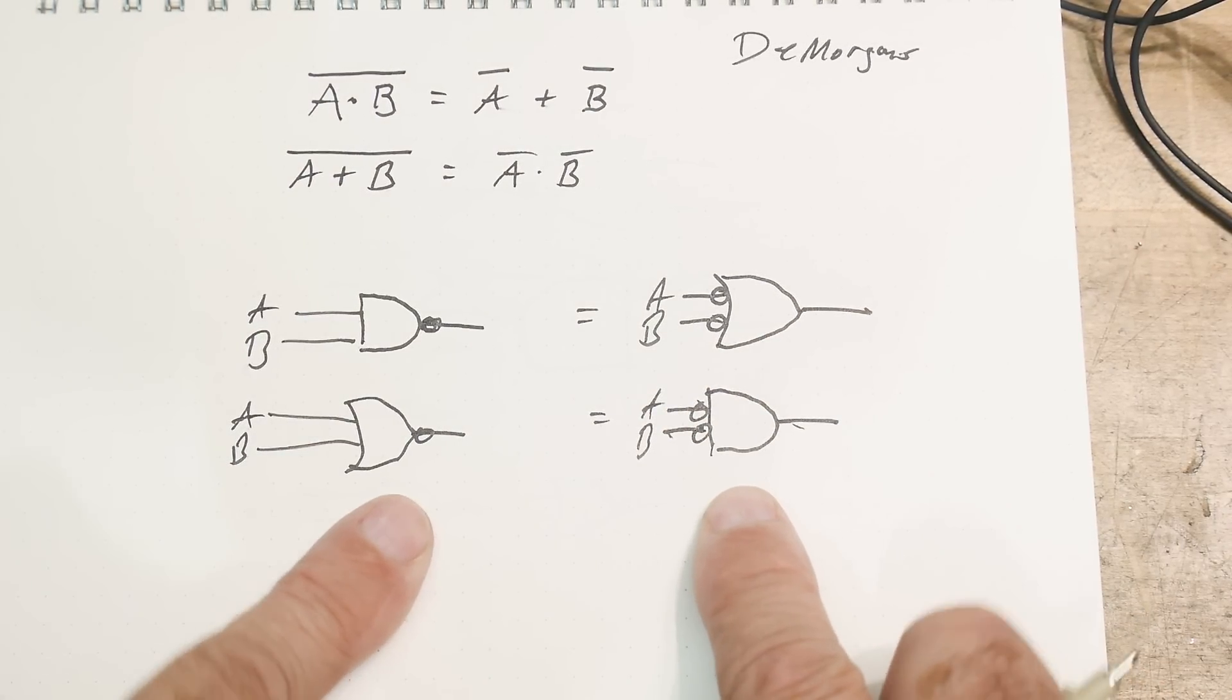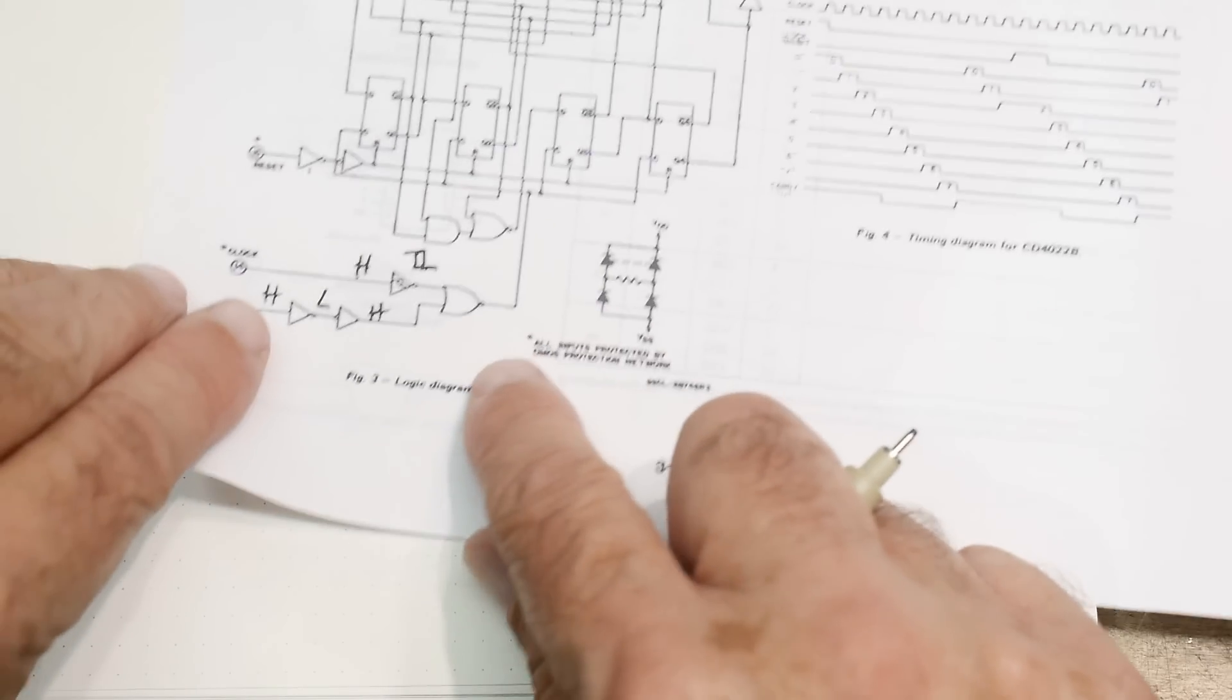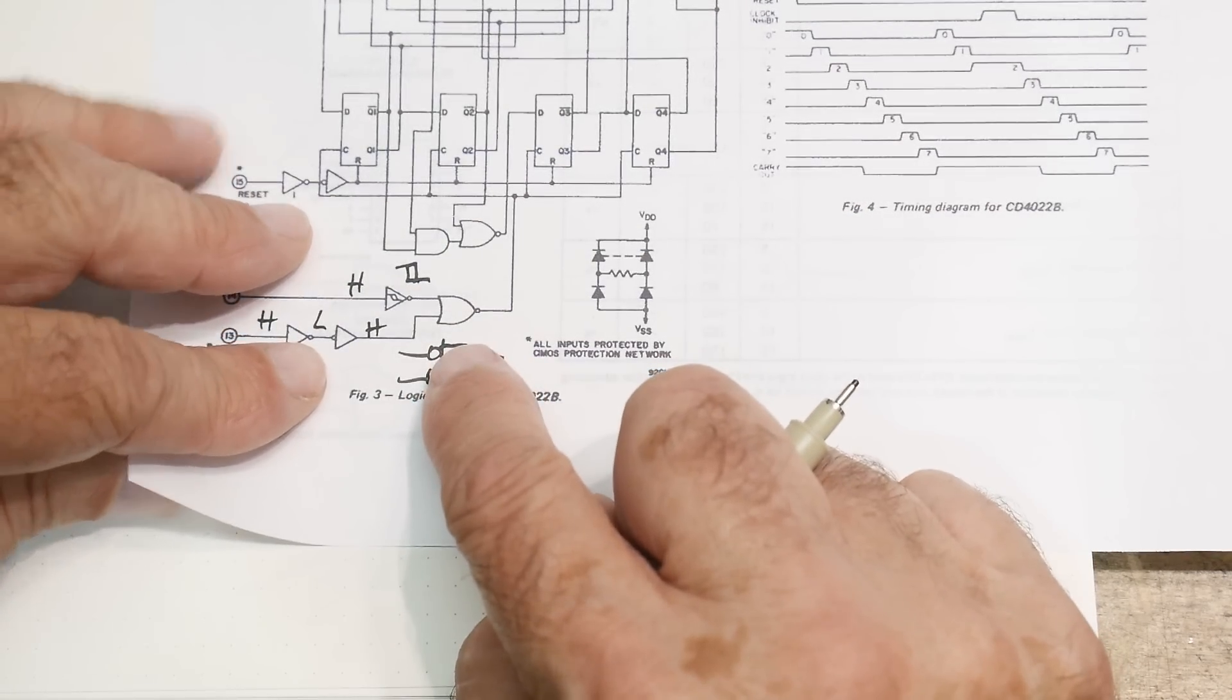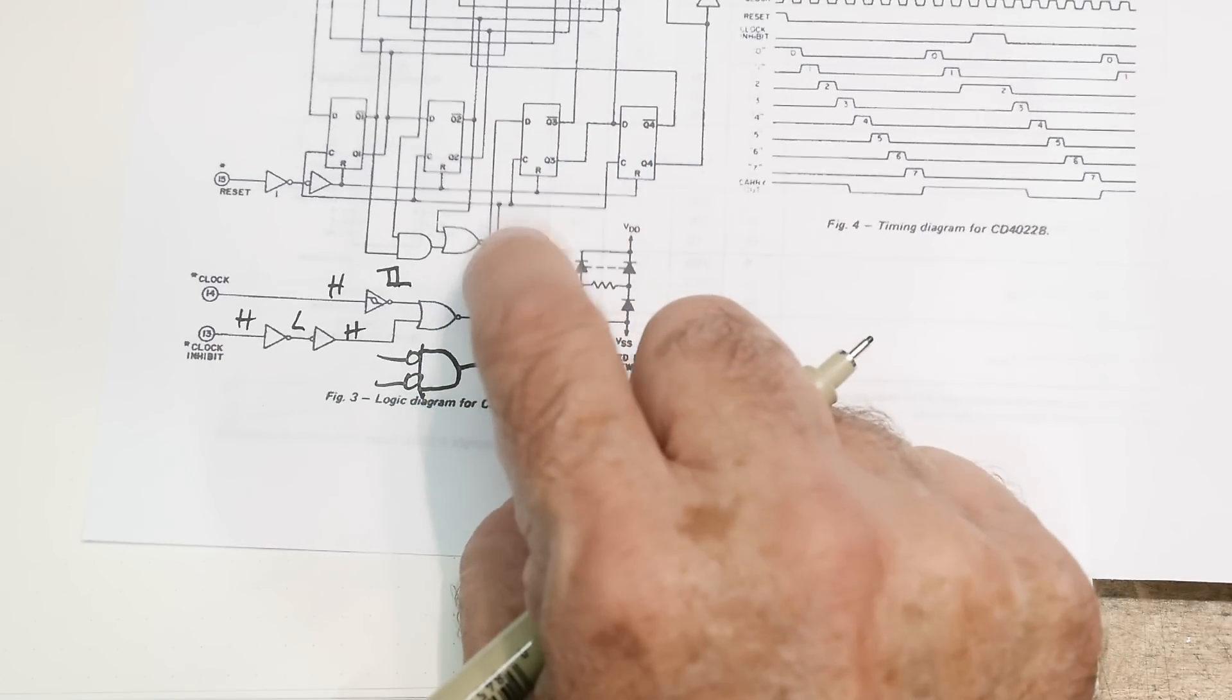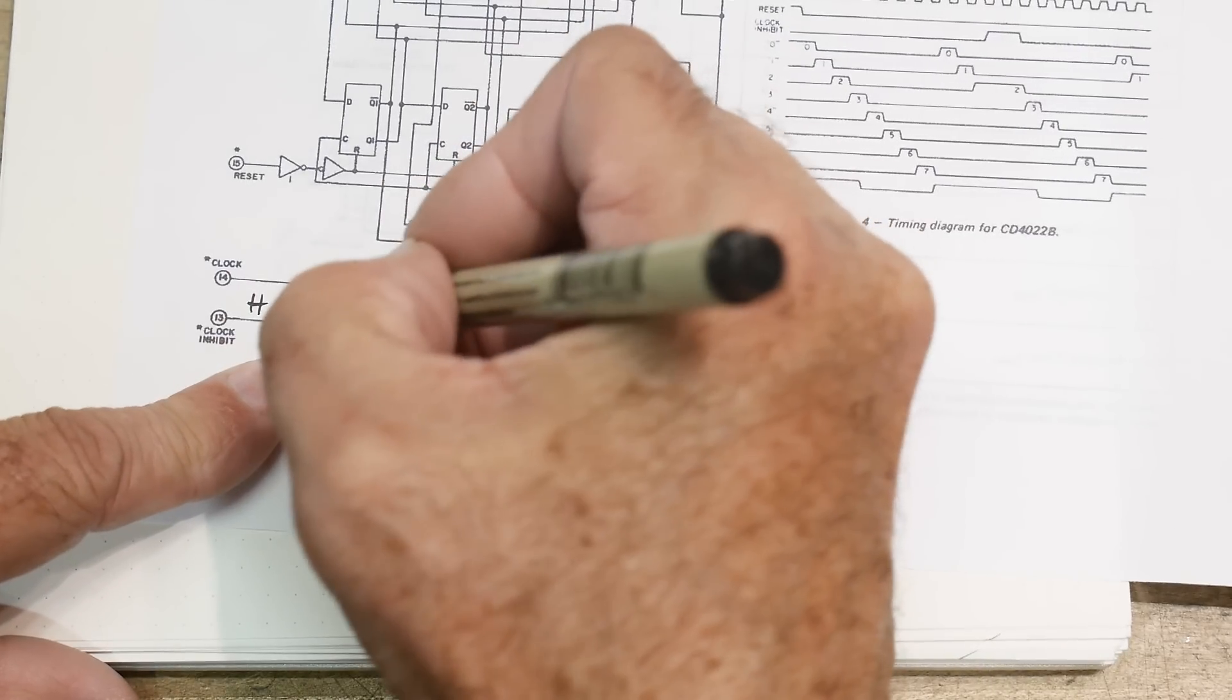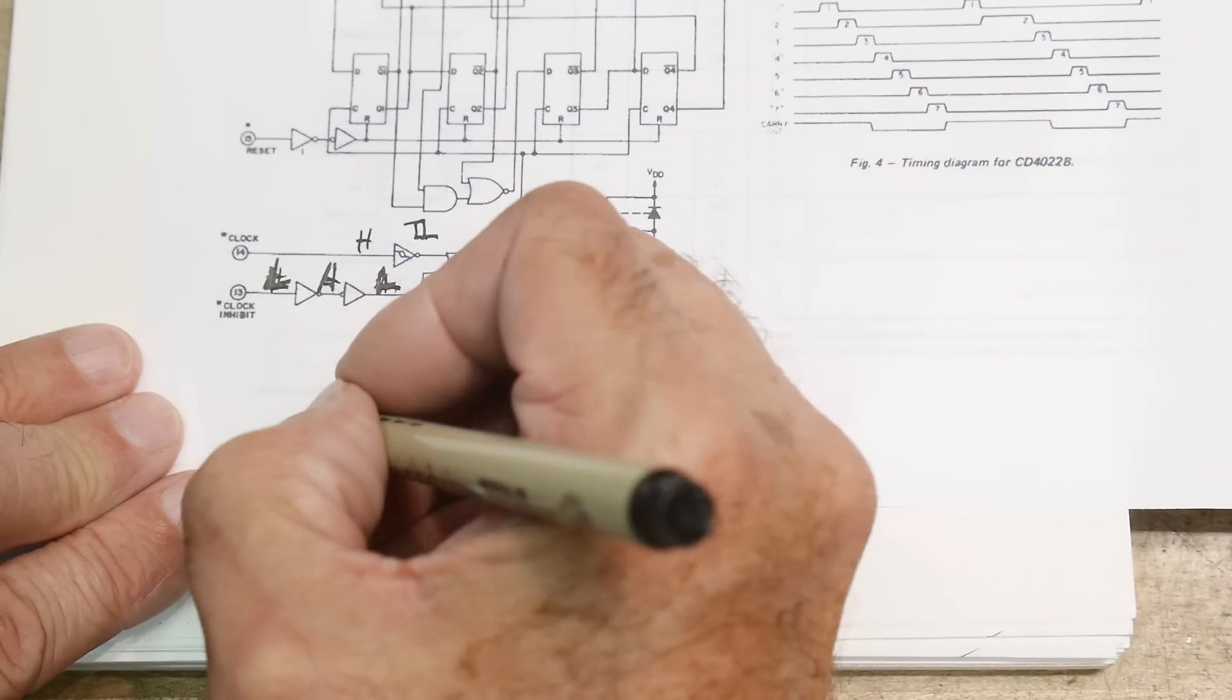So what we have here - if we do the circle circle thing, we end up with a circle circle, change the shape, circles cancel each other out. Instead of a NOR gate we end up with a NOT AND gate, and that's the actual function we have here. This has to be low true logic, which means this is low true logic, so they drew these wrong.